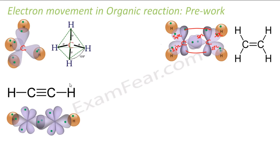Now for ethyne, these are all sp hybrid orbitals — this is my sp hybrid, this is my sp hybrid, and these are my p orbitals. These p orbitals form a double bond component, and together this is one sigma bond making a total triple bond, with single bonds on the ends.